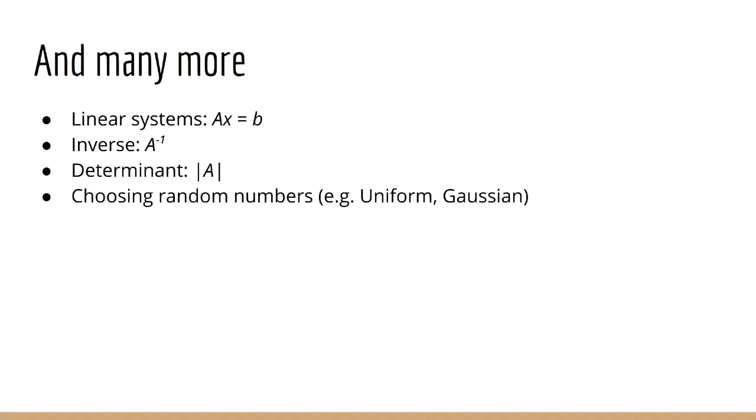Now, of course, there is a lot more you can do with NumPy that I'm not going to go over in detail in this lecture because it's just the intro. But here are some ideas. We can use NumPy to solve linear systems, that is, systems of the form Ax equals b, where you want to solve for x. We can use NumPy to find a matrix inverse and a matrix determinant. We can use NumPy to choose random numbers, which is extremely important. If you want a random number or a random matrix from the Gaussian distribution or the uniform distribution, NumPy can do that for you.